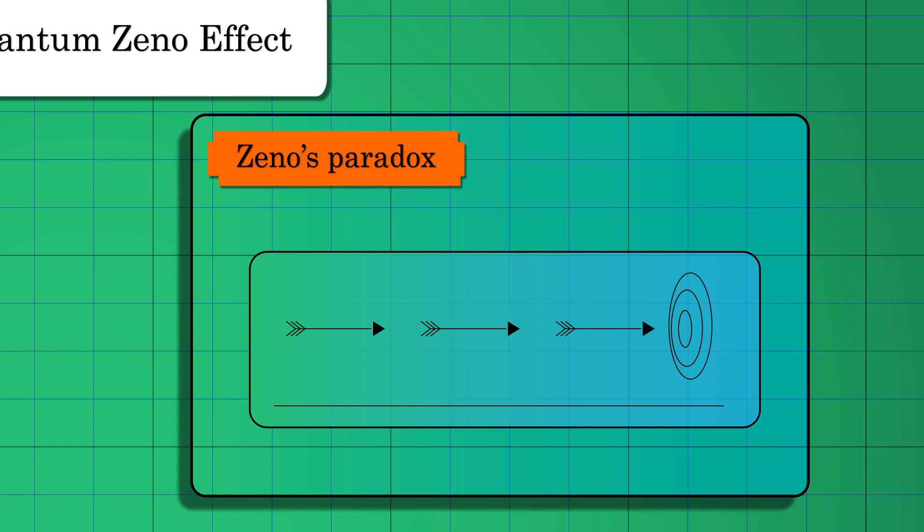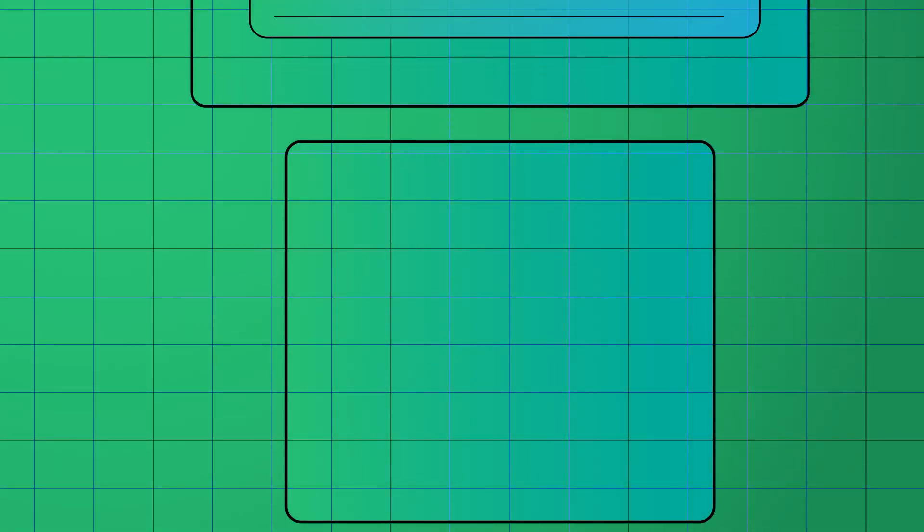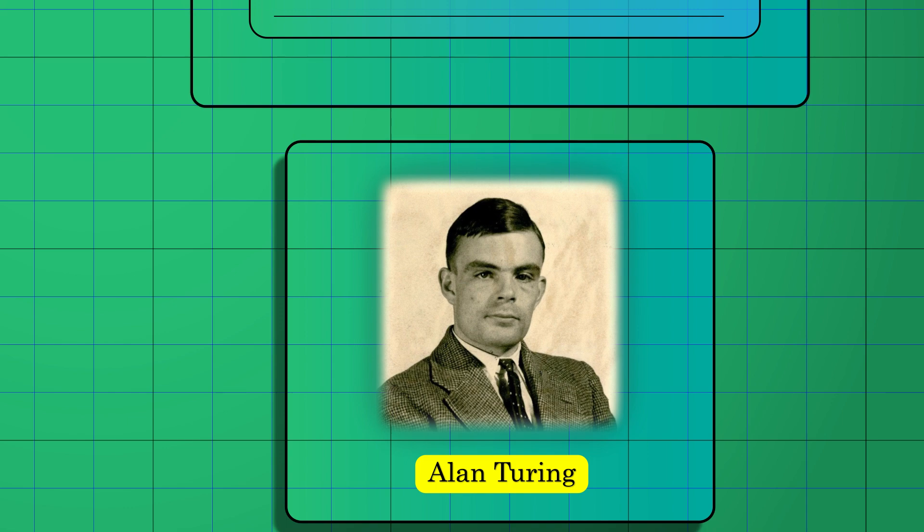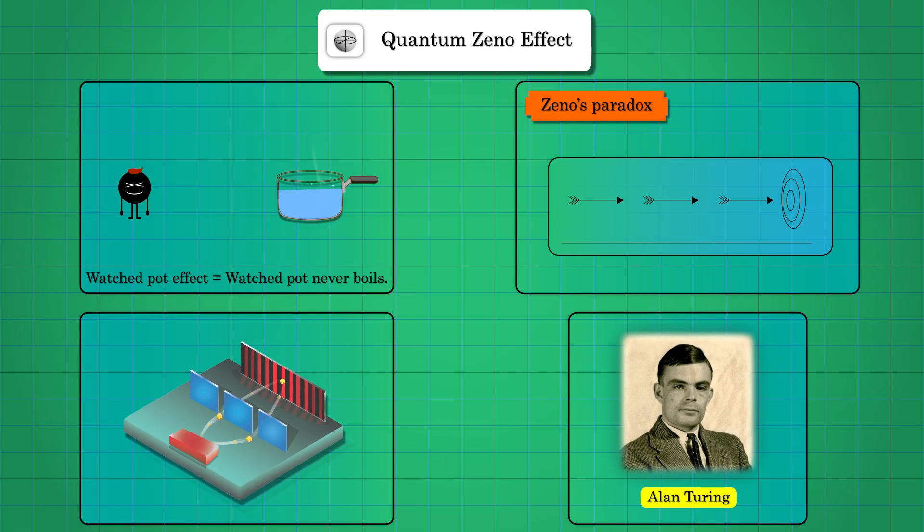Alan Turing, a famous mathematician, first formulated the Quantum Zeno Paradox, and later on, other physicists studied it rigorously.